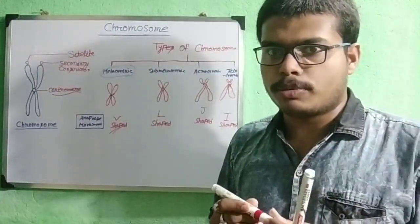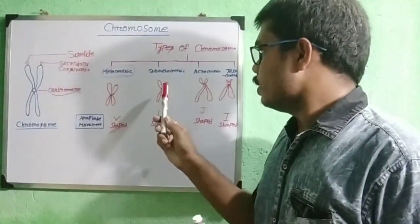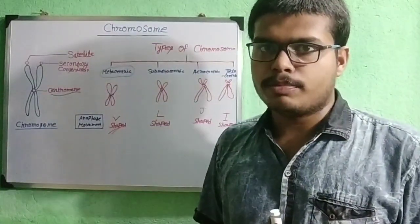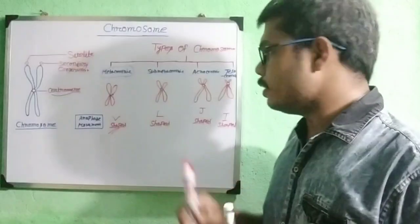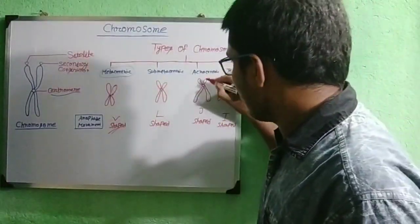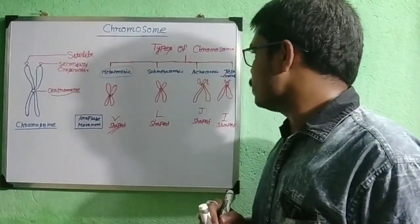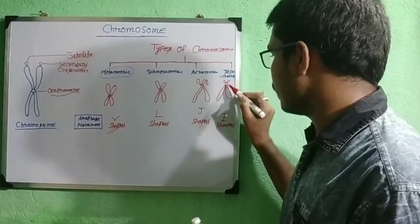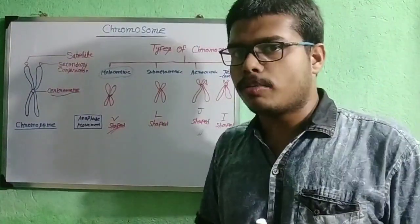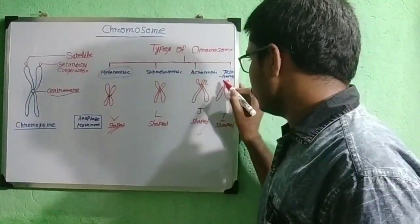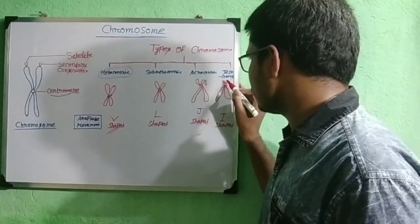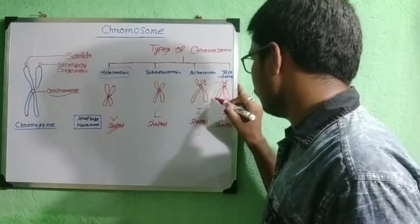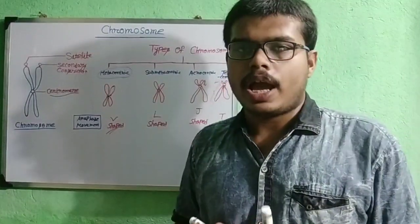In case of submetacentric chromosome, the centromere is some distance apart from its center, and it gives an L-shaped structure during anaphase movement. In case of acrocentric chromosome, the centromere is placed towards any end of the chromosomal arm — it gives a J-shaped structure. The last one is telocentric chromosome, where the centromere is at the apical end of the chromosome, with a very small arm and a longest arm. It takes an I-shape during anaphase movement.